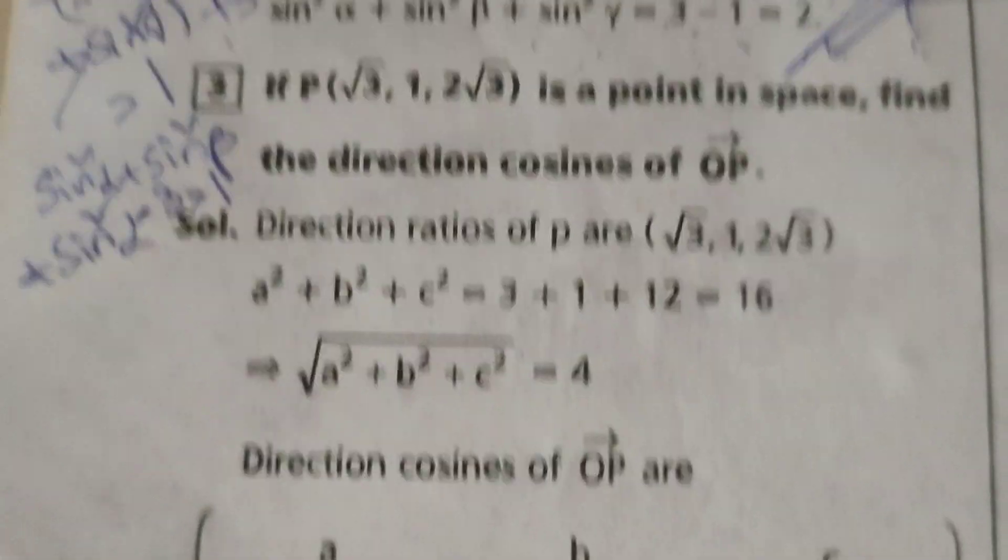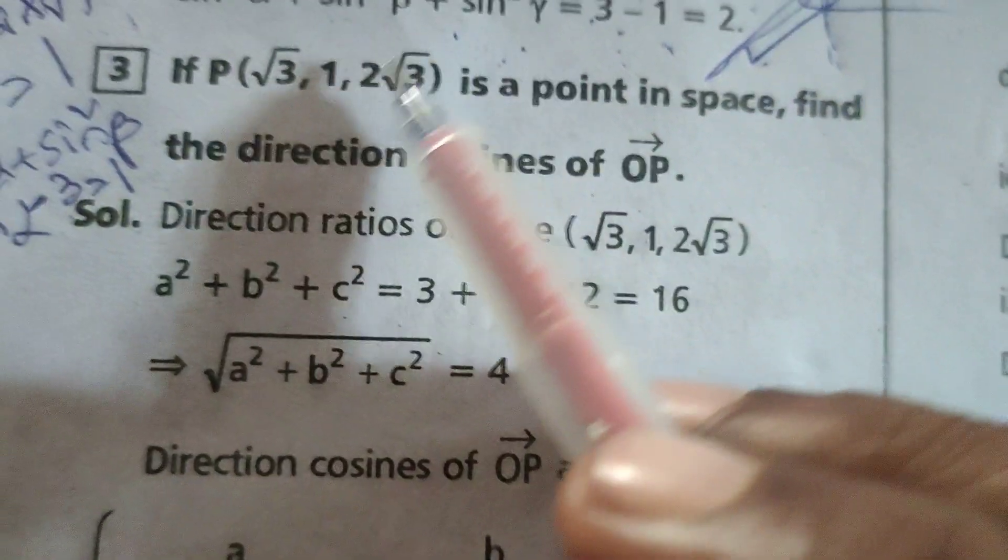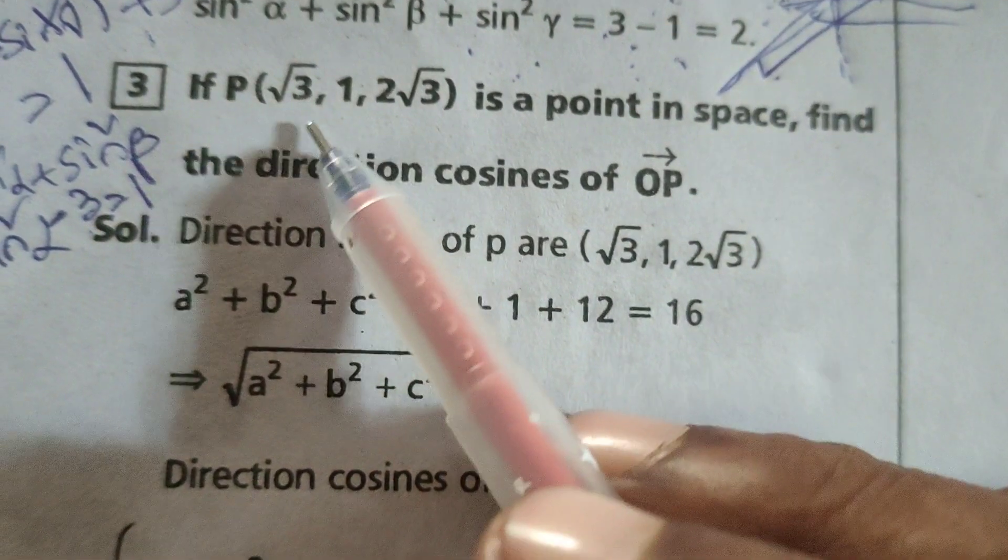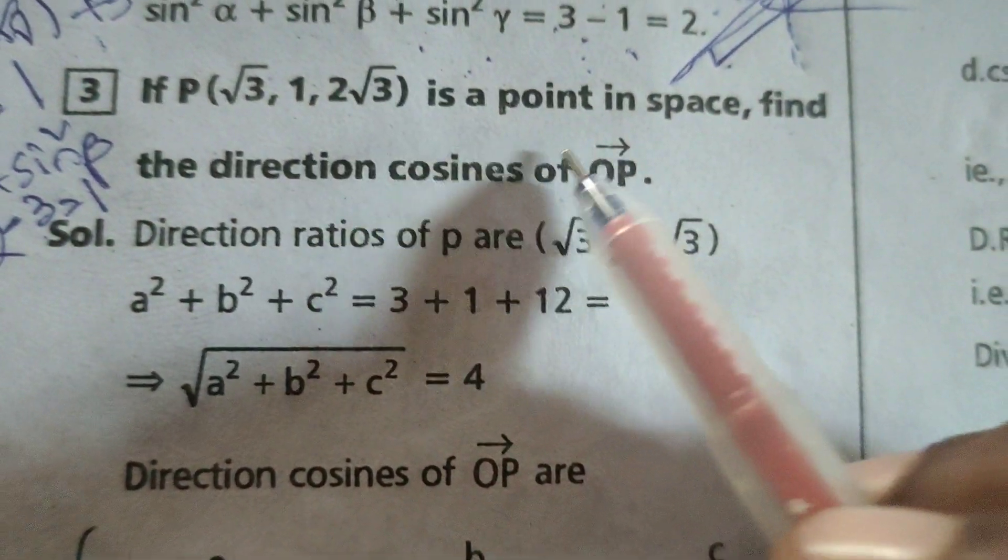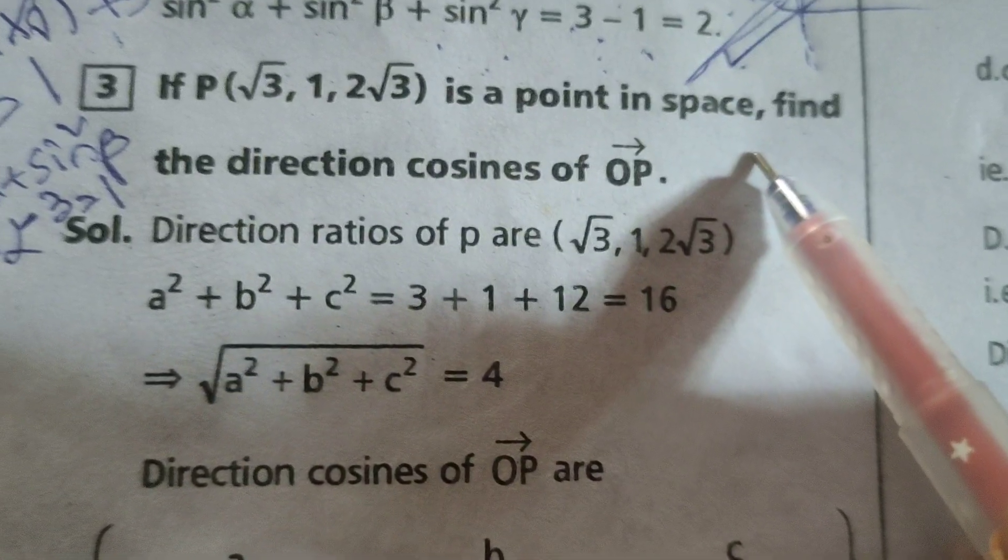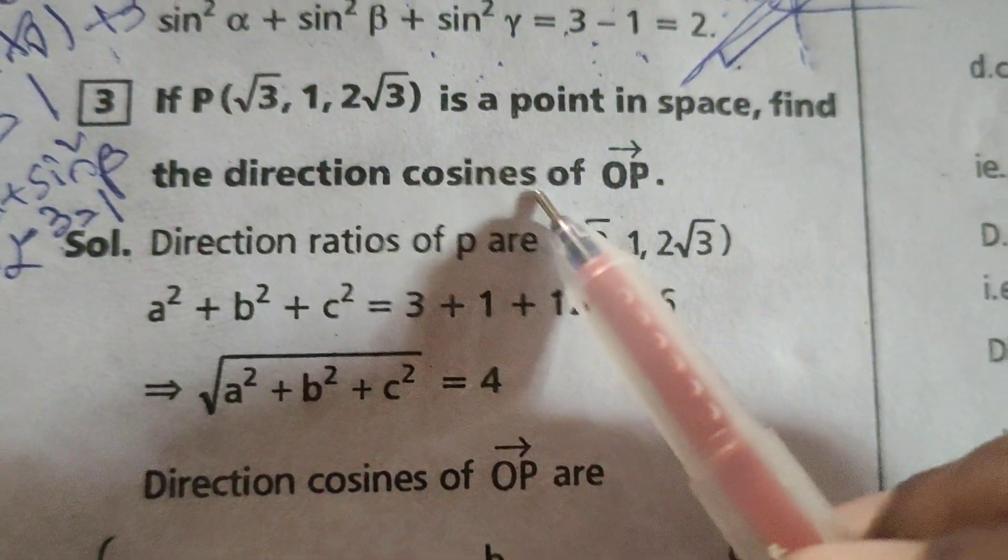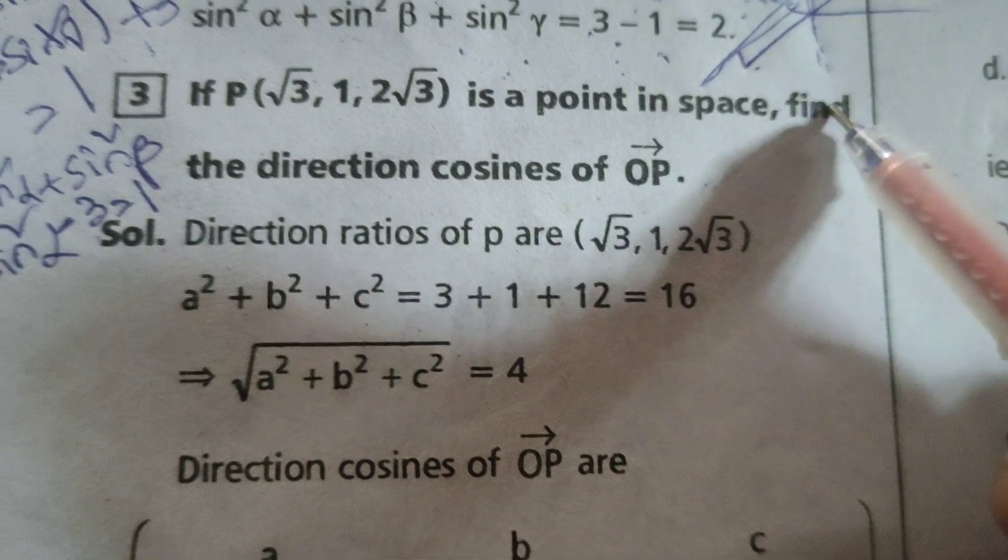This is Dr. Yuthi. Today we are going to explain this problem: if P of (√3, 1, 2√3) is a point in space, find the direction cosines of OP bar.